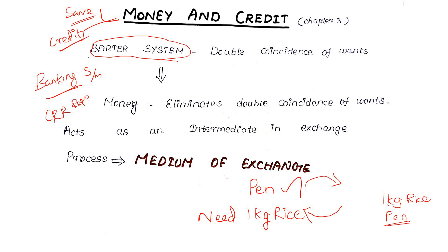Let's see how this works. You can see the two names correctly. Here is the concept of double coincidence of wants. This is a huge concept related to money.